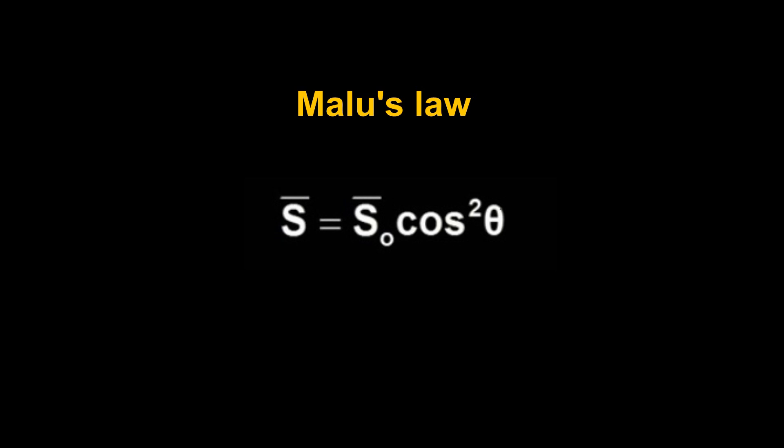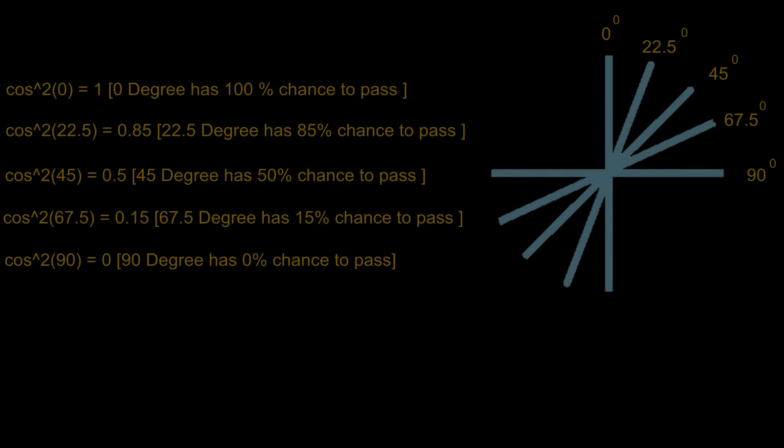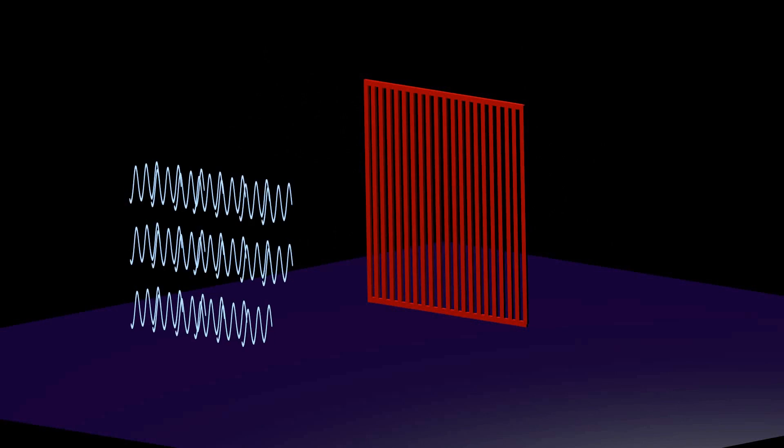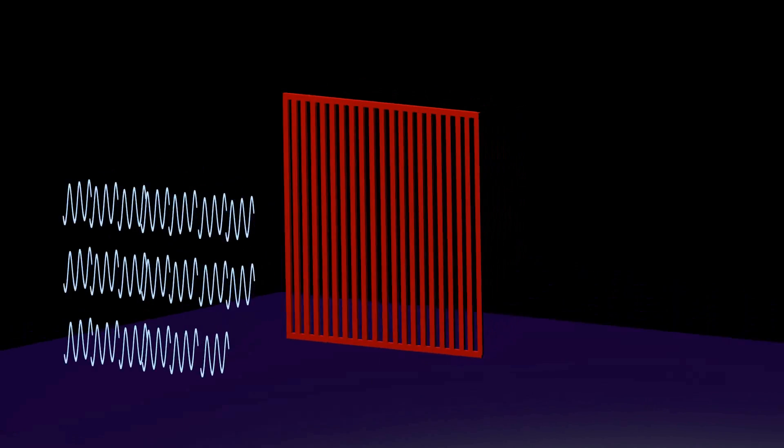Malus's law determines the probability of a photon passing through a polarization filter. Measuring multiple photons follows the same rule. If we measure 20 photons which are 45 degrees oriented, then 10 photons pass because the probability at 45 degrees is 0.5.